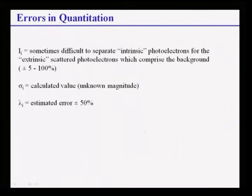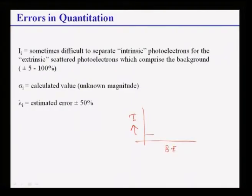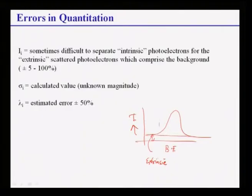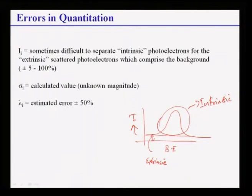Let us talk about errors. As I said, the error is approximately 10%. The error comes primarily from intensity measurements. The fundamental problem is the difficulty of separating the intrinsic photoelectrons from the extrinsic scattered photoelectrons which comprise the background. The extrinsic photoelectrons form the background of the XPS intensity, whereas the peak itself comes from intrinsic photoelectrons. The basic problem lies in fitting the background properly, because the intensity calculation depends on how you remove the background, and this introduces an error of approximately ±5 to 10%.